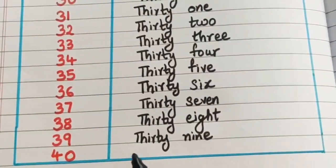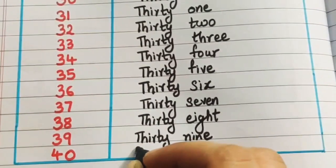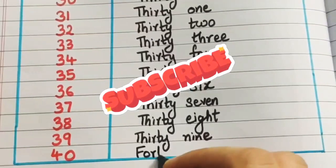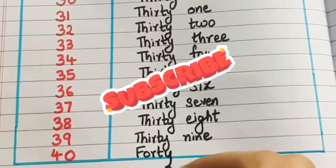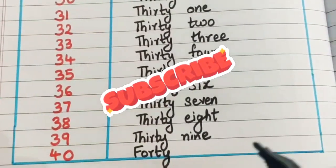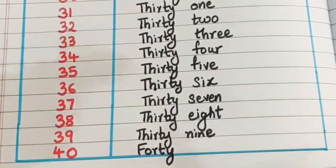40 — what is the spelling of 40 children? F-O-R-T-Y. F-O-R-T-Y, 40.